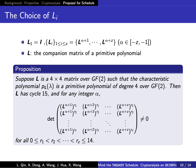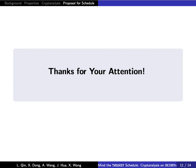When L satisfies specific properties — for example, L is the companion matrix of a primitive polynomial — we can give a proposition to guarantee the blockMDS property. Thanks for your attention.